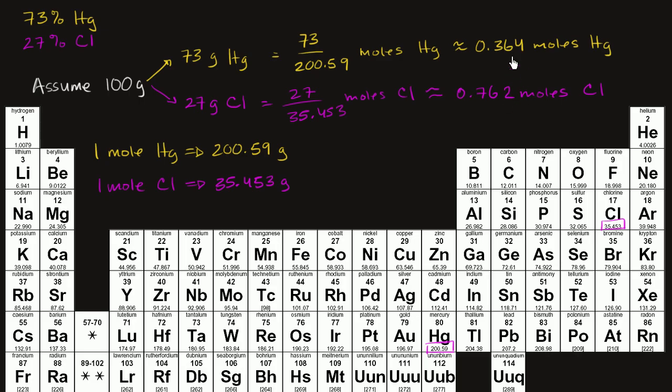This is a certain number of moles. This is another number of moles. Well, what's the ratio? Let's say, what's the ratio of chlorine to mercury? Well, you can eyeball it. It looks like it's roughly two to one, and you can verify that. If you take that number, and you divide it by 0.364,